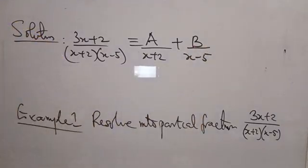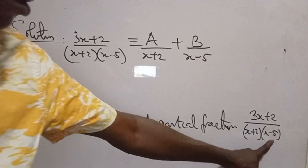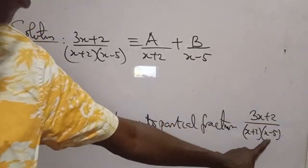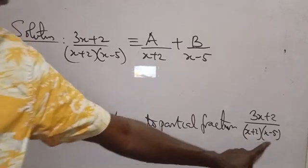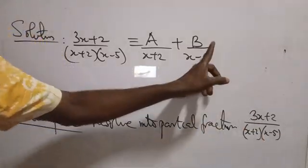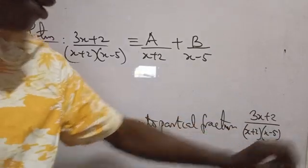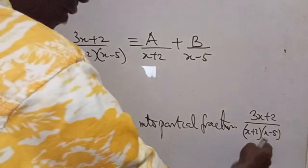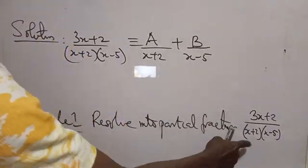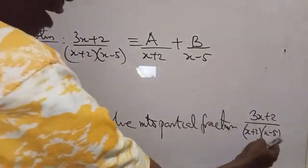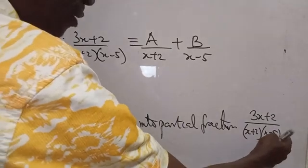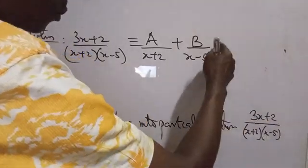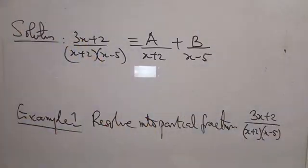Where is B coming from? B is as a result of the second linear factor. If we have another linear factor making it three, then we're going to have plus C all over the third linear factor. We have two linear factors here: A will take care of X plus 2, B will take care of X minus 5. Suppose you have X minus 6 or X plus 7, making it three linear factors, then plus C all over that one as well.